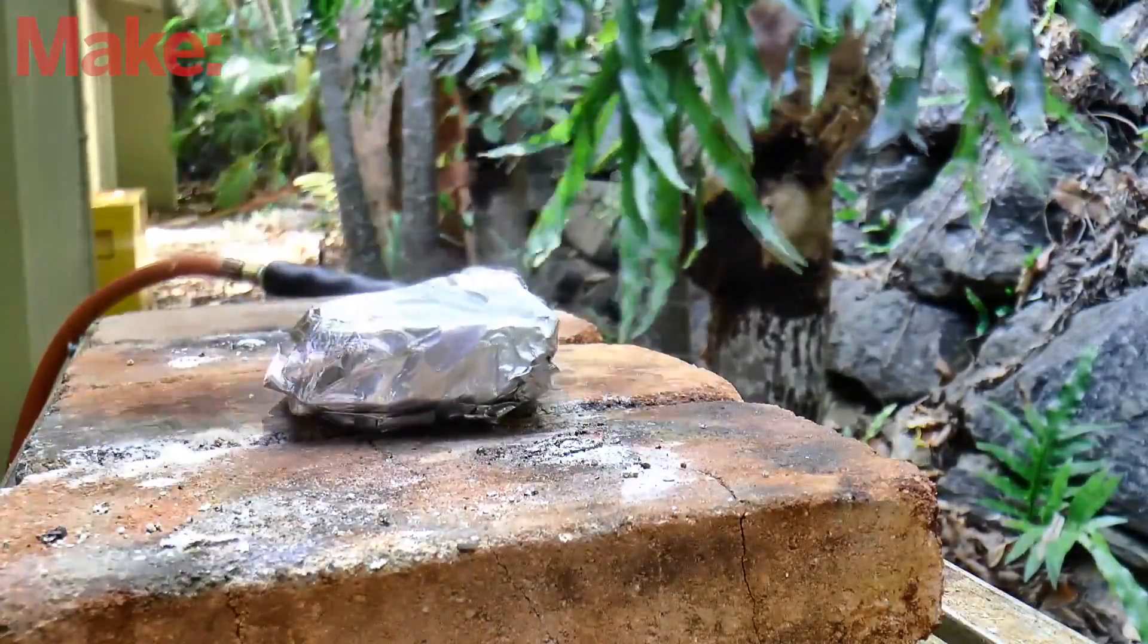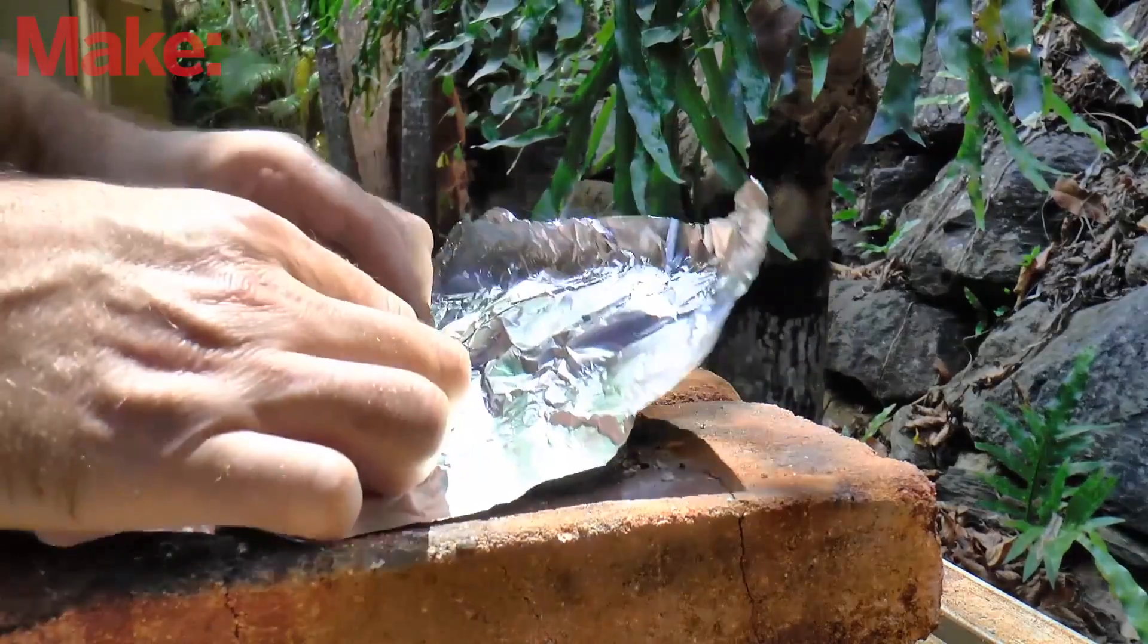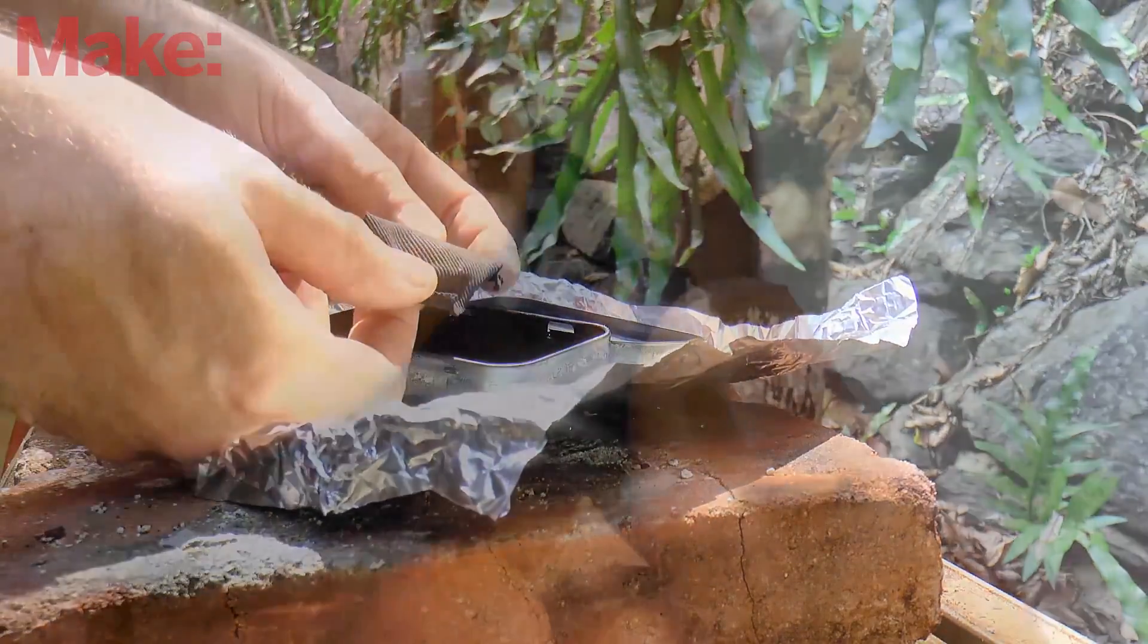Immediately wrap the tin in some foil to prevent the char cloth from igniting before it cools down. When it's cool, open the tin, and if all has gone well, you'll see a little piece of char cloth ready for our first test.